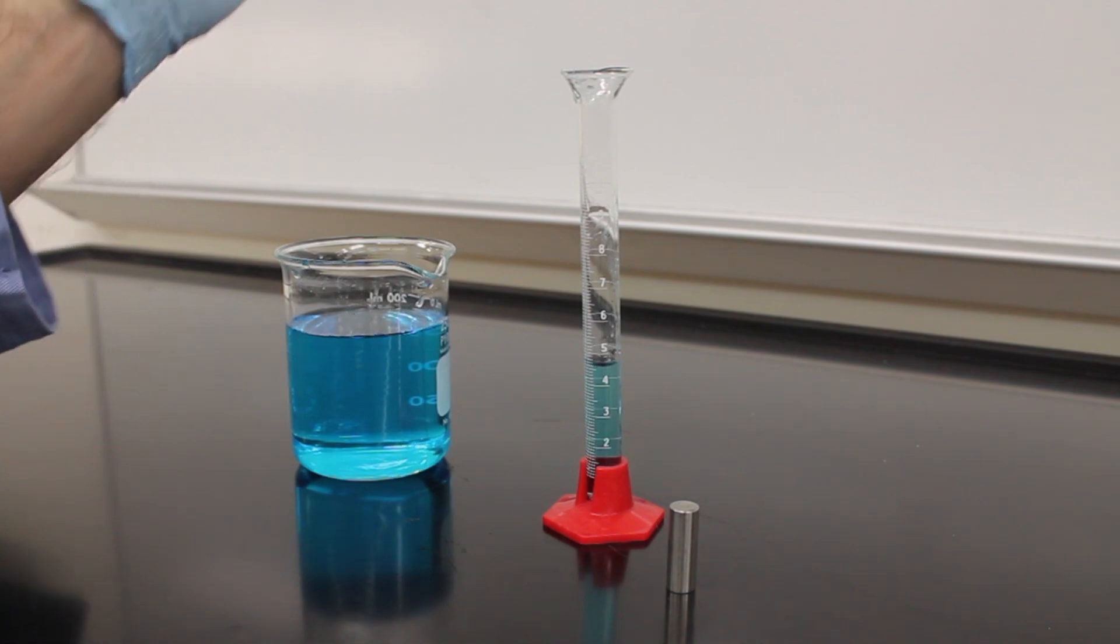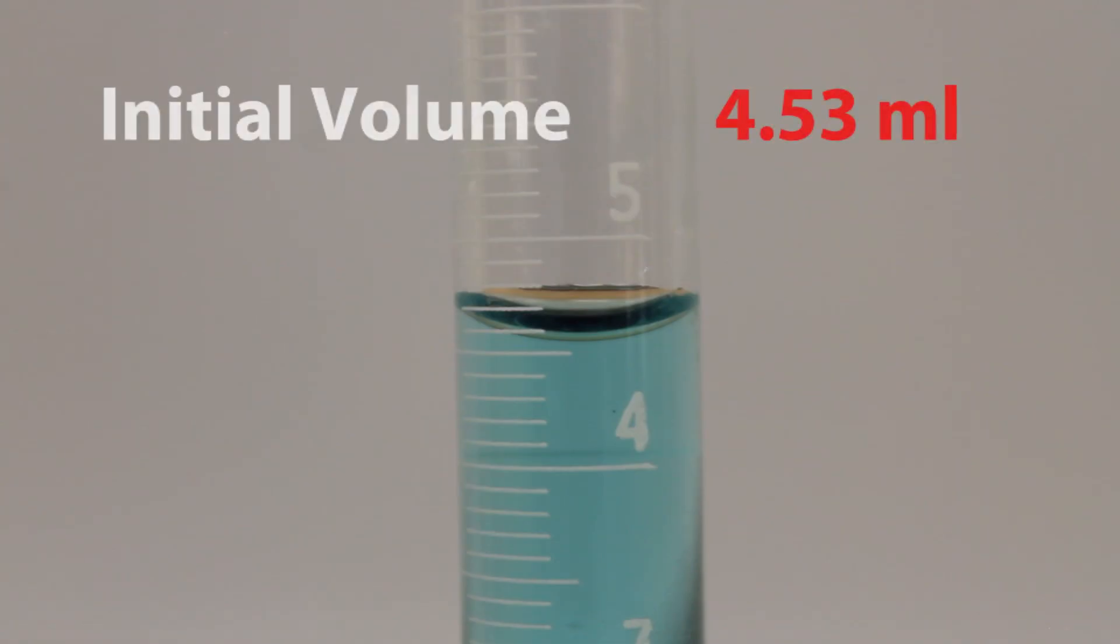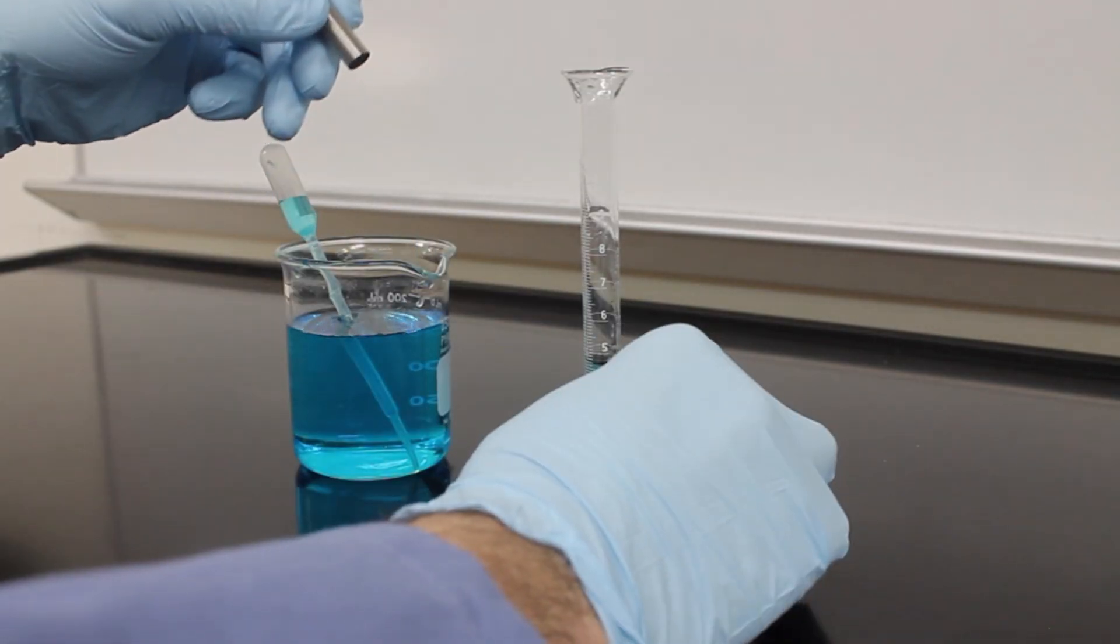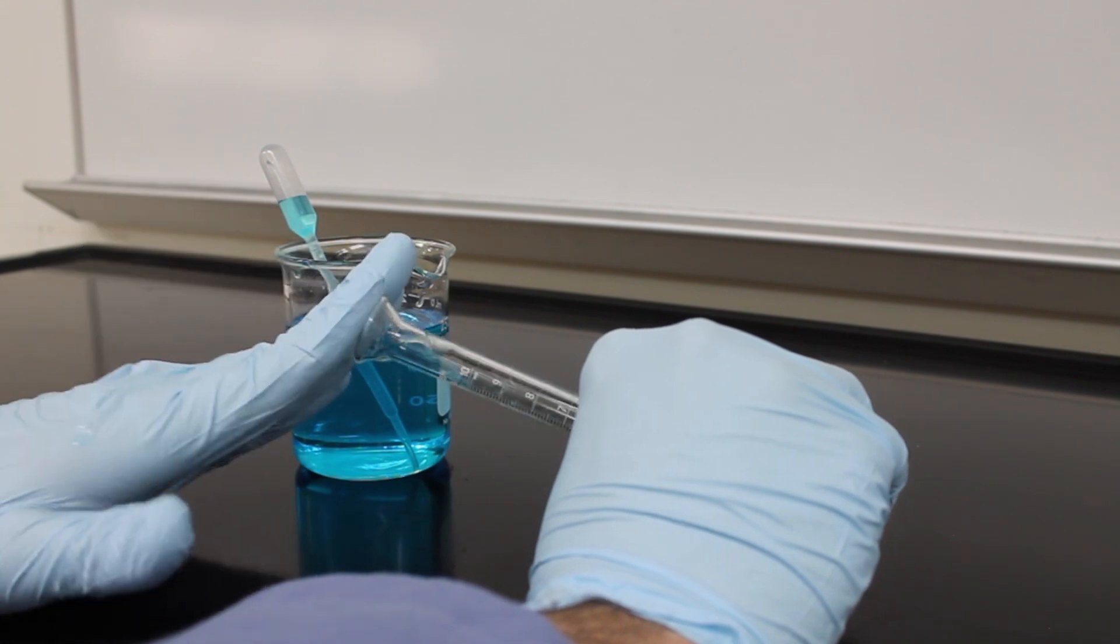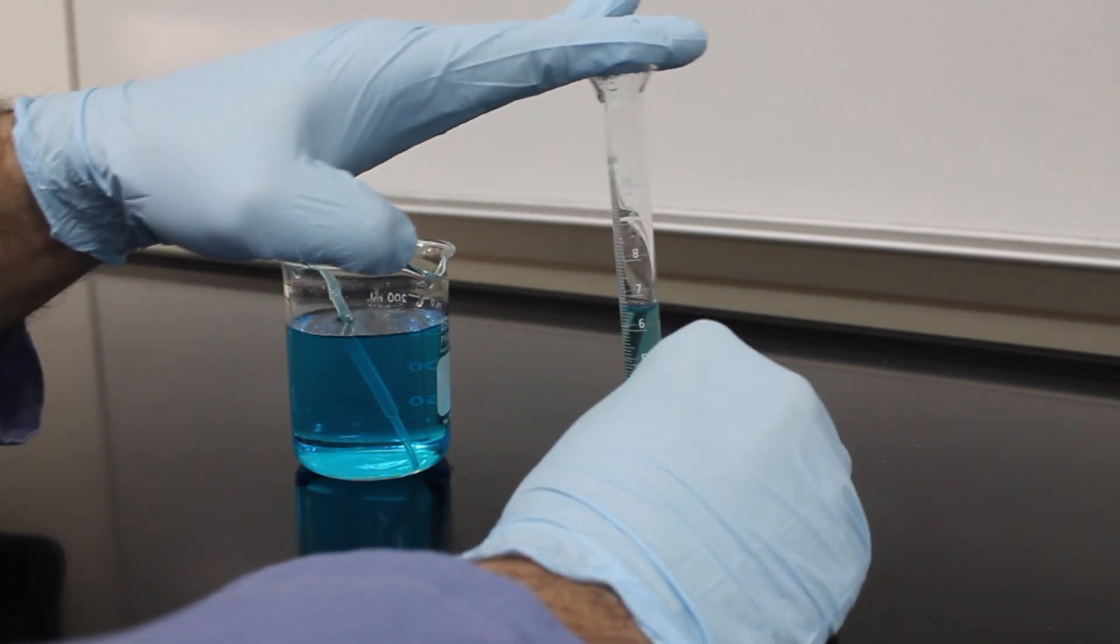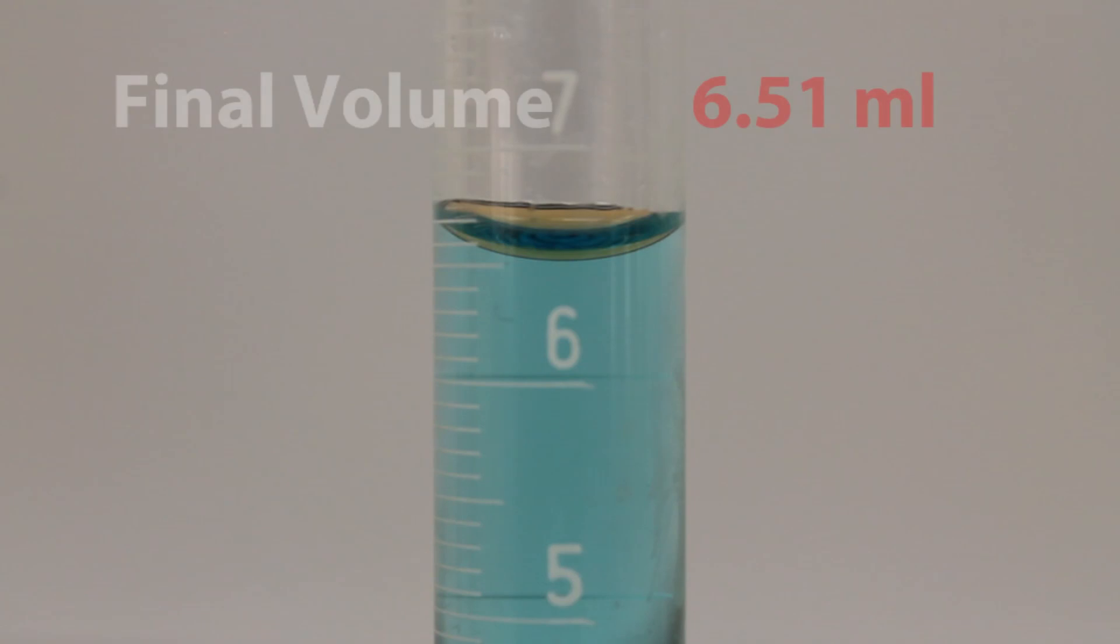And record your initial volume. Here I recorded 4.53 milliliters. Make sure you tilt the graduated cylinder at a steep angle and drop your solid object in. This prevents breaking the bottom of the glass cylinder and reduces the possibility of liquid splashing out.